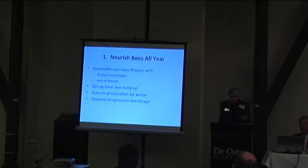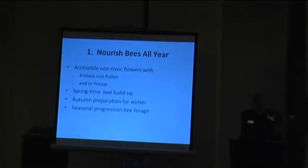To nourish bees all year, you've got to have flowers with accessible nectar and pollen — it might look like it has a lot, but the bees can't always get access to it. You need protein-rich pollen, as Tony covered. The most important thing to realize is that in springtime you're building up your pollinator population and honey-gathering population, so you need good food then. In autumn, if you're preparing for winter, you've got to make sure bees have food stores to get through the winter, with a seasonal progression through the whole year.